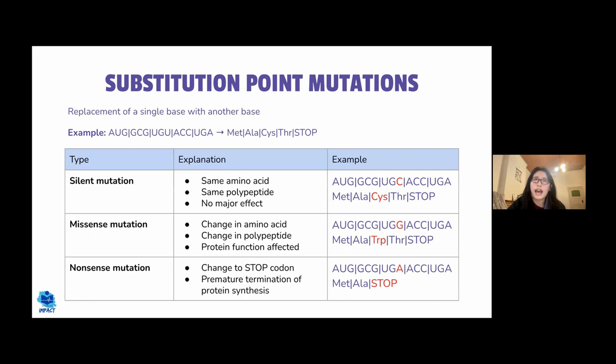There are three types of mutations: point mutations, block mutations, and frameshift mutations. With point mutations, one base is replaced with another. There are three types of point mutations. Silent mutations occur when the change in the DNA sequence still results in the production of the same polypeptide, because the genetic code is degenerate — more than one codon can encode for the same amino acid.